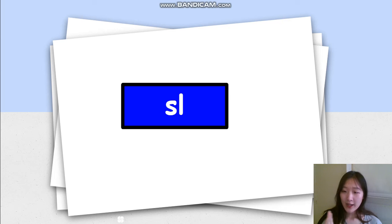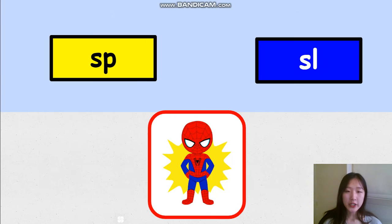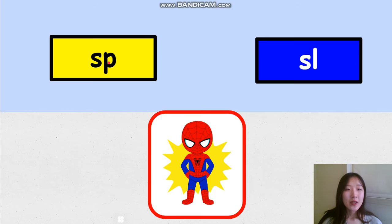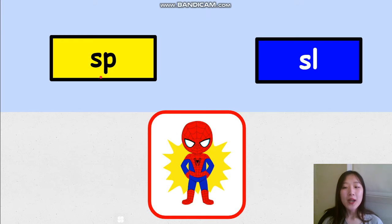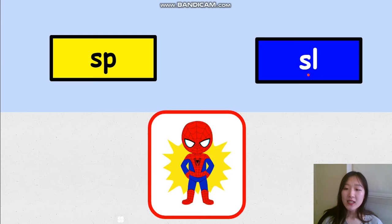So again, we will do the same activity by doing the picture sorting. Don't look at the picture right now. Let's review these two blends one more time. The one on the left side, SP, sounds like SP. What about the blue one? It sounds like SL.